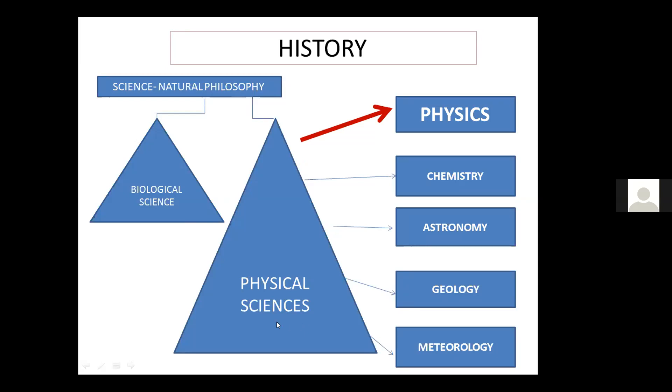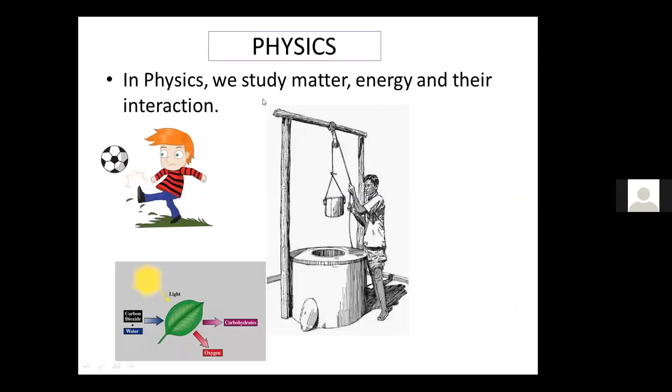It got divided into biological science which dealt with the study of living things, and physical science which dealt with the study of non-living things. Finally, in the 19th century, the physical science got divided into five main branches, among which physics was the most important.